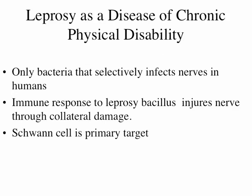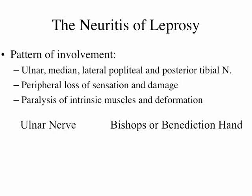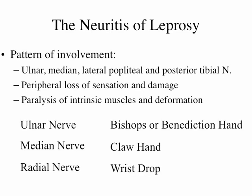Leprosy is a disease of chronic physical disability — it's the only bacterium that selectively infects nerves in humans. The immune response to the leprosy bacillus injures nerves through collateral damage, with the Schwann cell as the primary target. Ulnar nerve involvement is common, giving a characteristic hand change called bishop's, or benediction, hand — probably median nerve can do the same sort of thing, producing either ulnar claw or median claw hand. The radial nerve gives wrist drop.